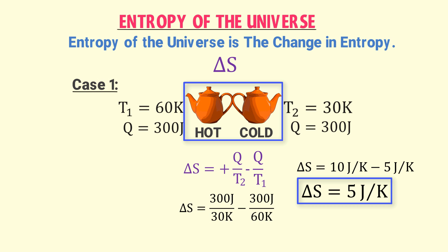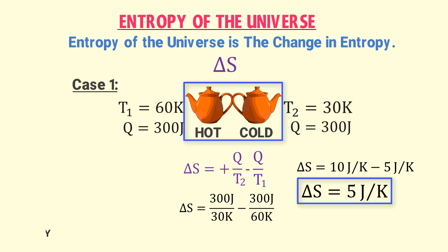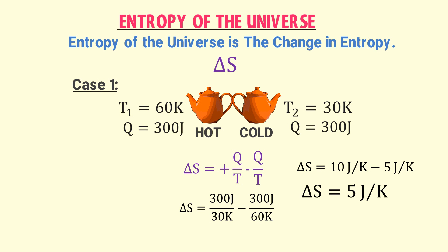Thus ΔS = 5 J/K, which is positive. This gives us our first case: the entropy of the universe always increases, or the total change in entropy of the universe will always be positive.